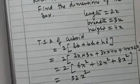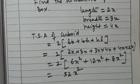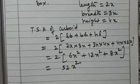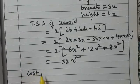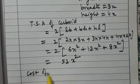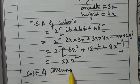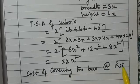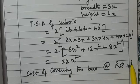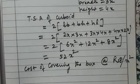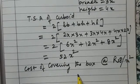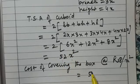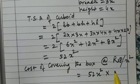Now if we are going to cover the box at the rate of Rs 8, what will be the cost? First, we find the cost of covering the box at the rate of Rs 8 per square meter. 52x² has to be covered, so that will be 52x² × 8.